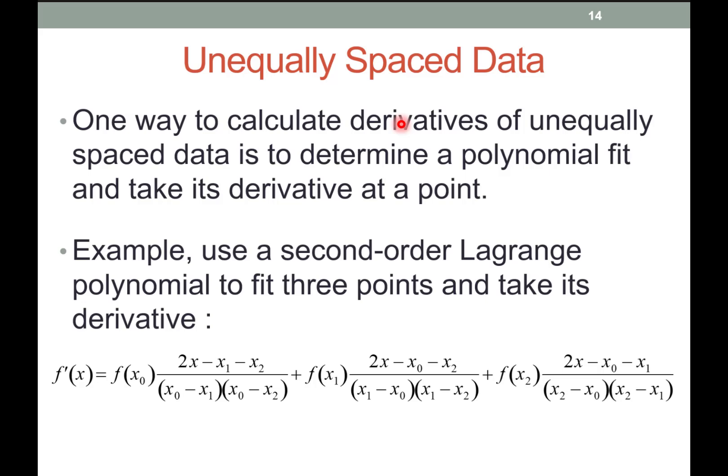Another scenario where this is useful: if you have sensors running on different machines, where one computer collects data every second and another every two seconds, how do you match the data? One is producing double the data as the other. Again, apply interpolation — sample the data so that both computers produce values every second, then combine and use the data. That could be your x on one computer and your y on another.